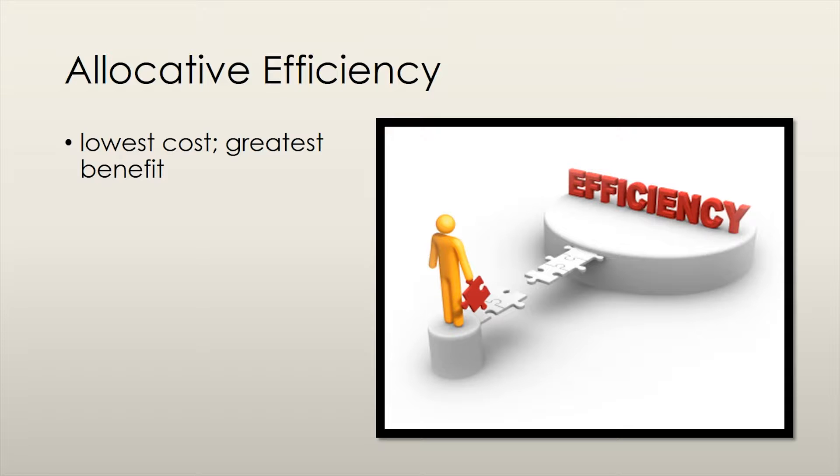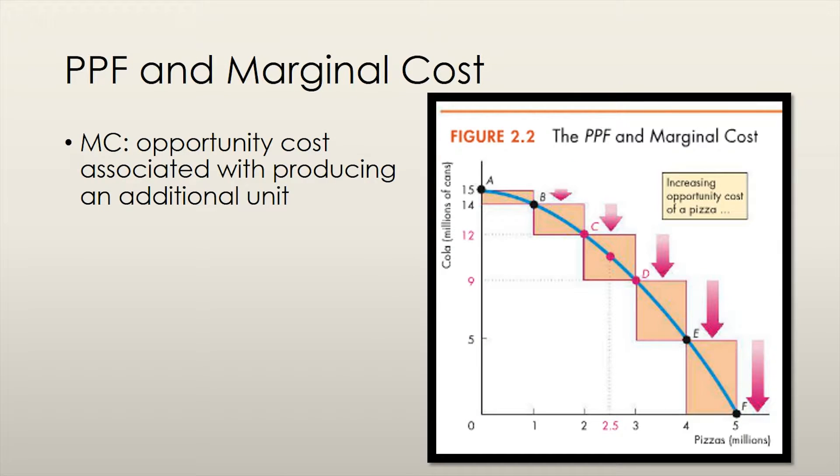Allocative efficiency is achieved when goods are produced at the lowest possible cost and in quantities that provide the greatest possible benefit. In order to understand the concept of allocative efficiency fully, we'll need to introduce a few new concepts.